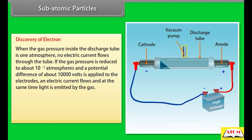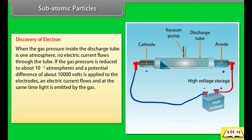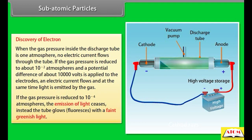When the gas pressure inside the discharge tube is 1 atmosphere, no electric current flows through the tube. If the gas pressure is reduced to about 10 to the power minus 2 atmospheres and a potential difference of about 10,000 V is applied to the electrodes, electric current flows and at the same time light is emitted by the gas. If the gas pressure is reduced to 10 to the power minus 4 atmospheres, the emission of light ceases.